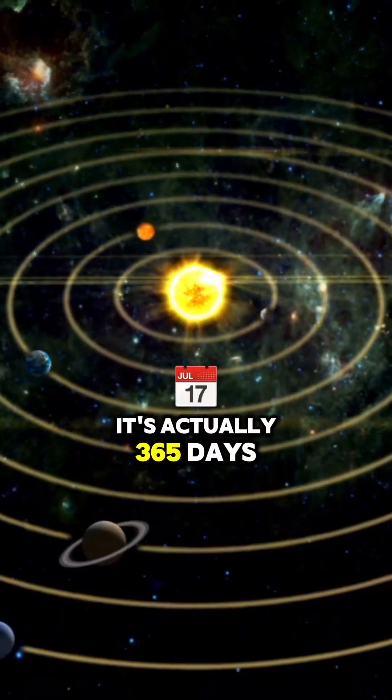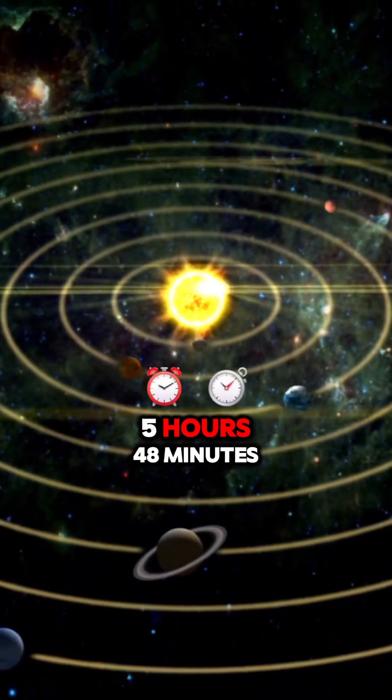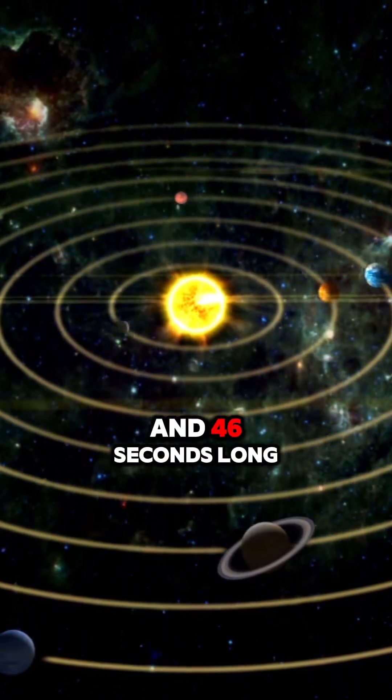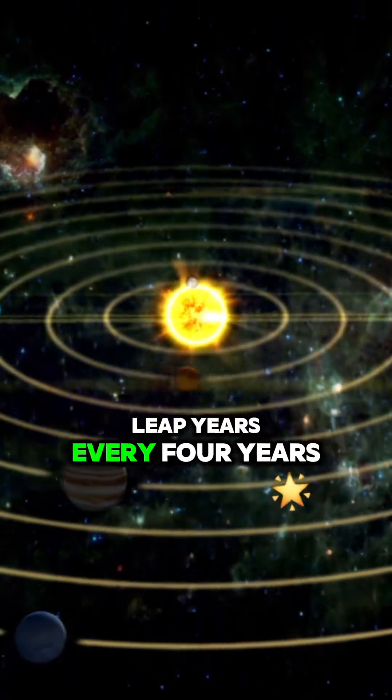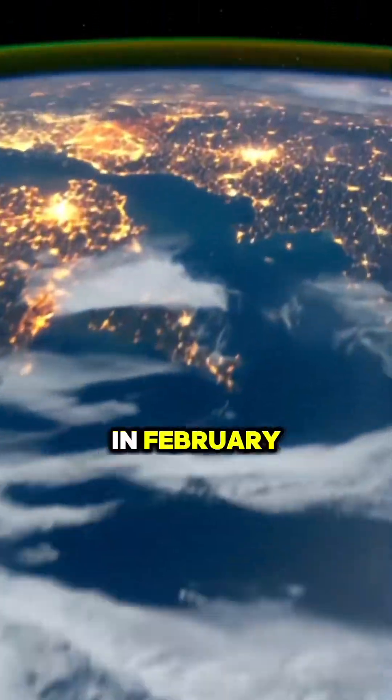It's actually 365 days, 5 hours, 48 minutes, and 46 seconds long. Yeah, that extra time is why we have leap years every four years, adding an extra day in February.